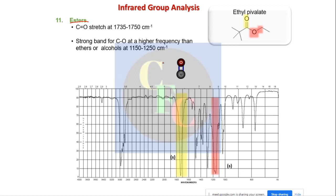Esters have both a carbonyl group and a C–O–C ether-type bond. The ether-type C–O bond appears around 1100 cm⁻¹, while the carbonyl appears in its region. If you find these two bands together, you can say it is an ester.